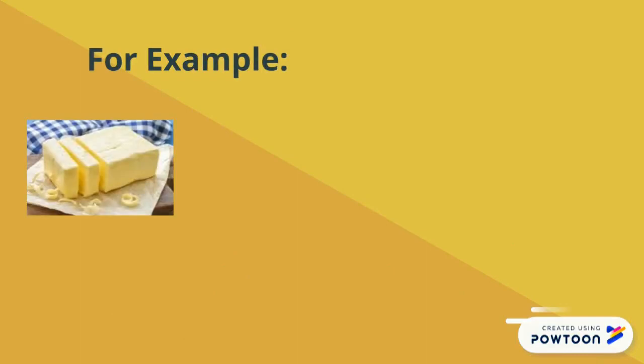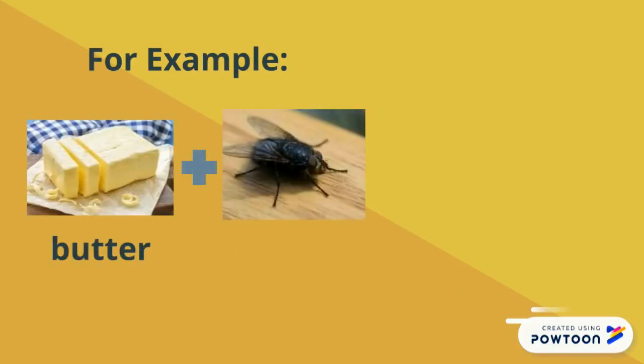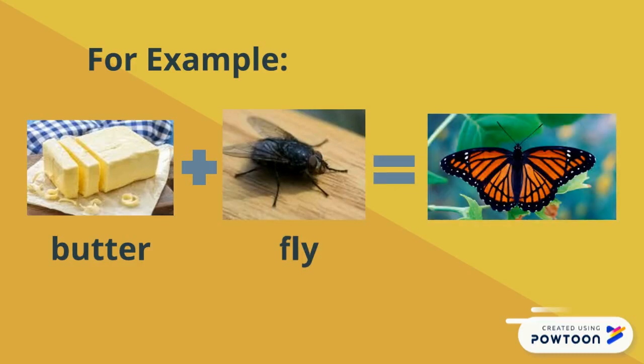For example, here is a picture of butter, and here is a fly. When we put those two words together, what new word do we come up with? Yes — butterfly is our compound word.